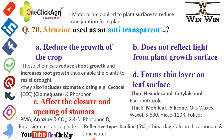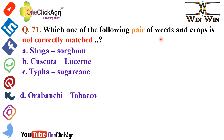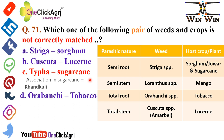Question 71: Which weed-crop pair is not correctly matched? The right answer is Typha–sugarcane, because Kans grass is associated with sugarcane, and Typha is an aquatic weed. From a parasitic weed chart: semi-root — Striga, host plants are sorghum and sugarcane; semi-stem — Loranthus species, host crops are mango and sometimes silver oak.